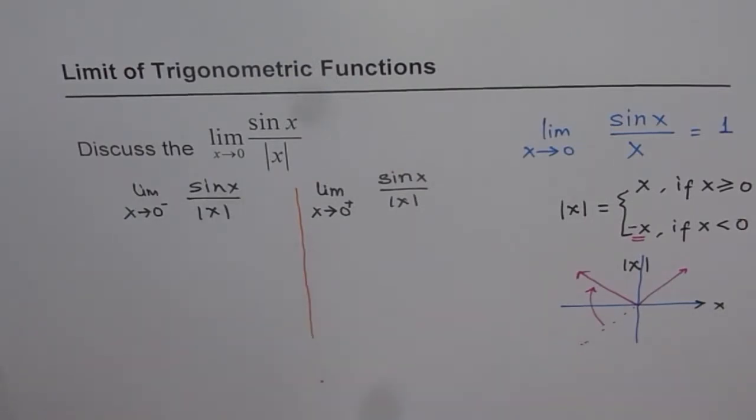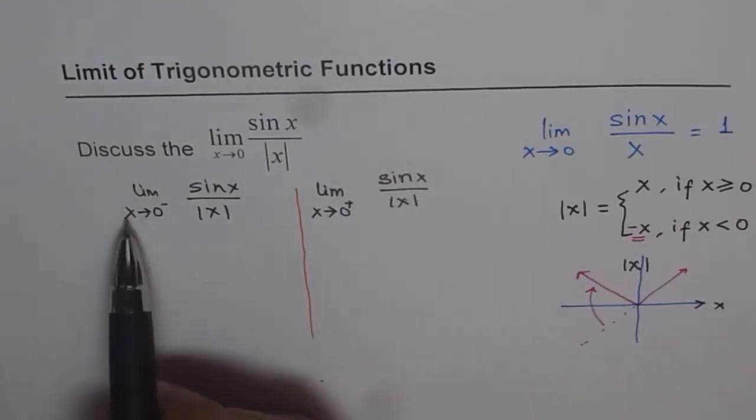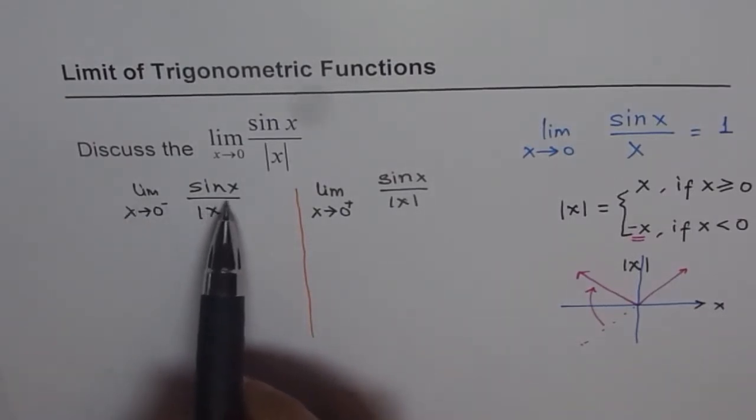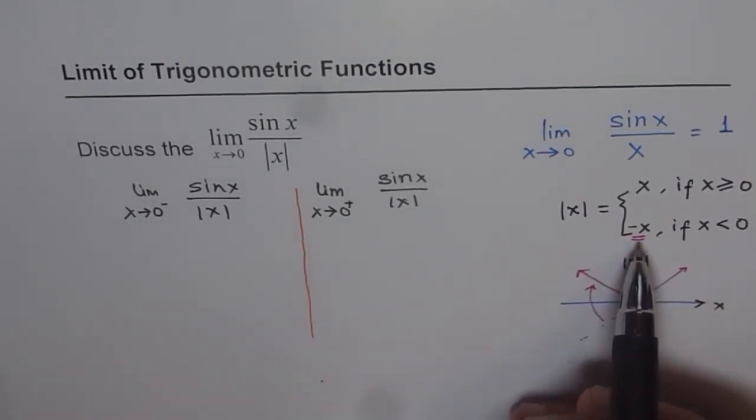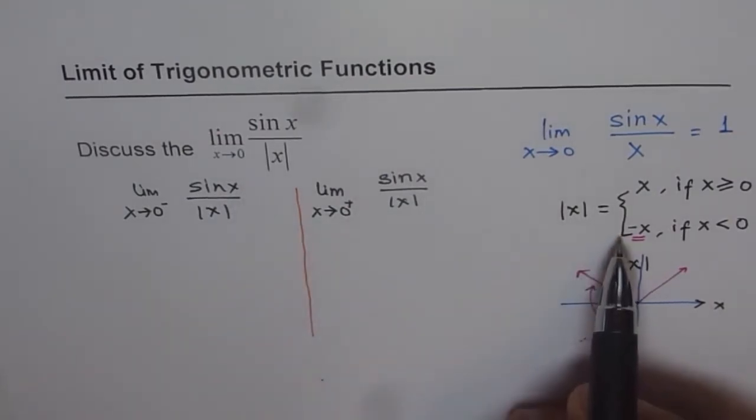So, now, I think it is easier for us to do the problem. So, if we are trying to figure out limit of this function when x is less than 0, then we have to look into this part. What is absolute x equals to? Absolute x will be equal to minus x.